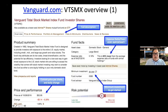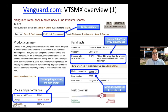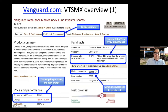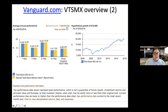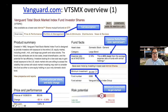Moving to the Vanguard tool — you can find it by Googling the fund name. It gives an overview, price performance, portfolio management, fees, distribution, and news. The overview shows a description and key stats including the expense ratio — 16 basis points at that time, 84% lower than the average expense ratio.